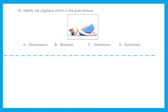Question 19: Identify the yogasana shown in the given picture. Can you identify this? This is Balasana — option B is the right answer. It is also known as child's pose. It is a restorative pose that is known for its calming, grounding, and relaxing effect.